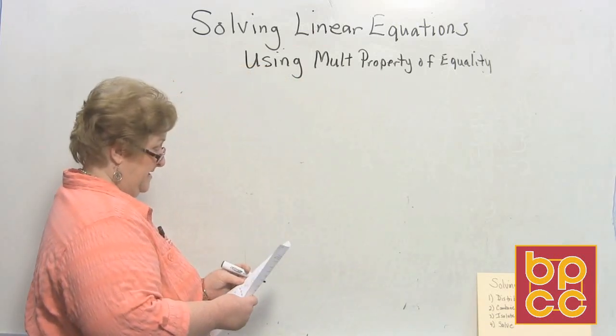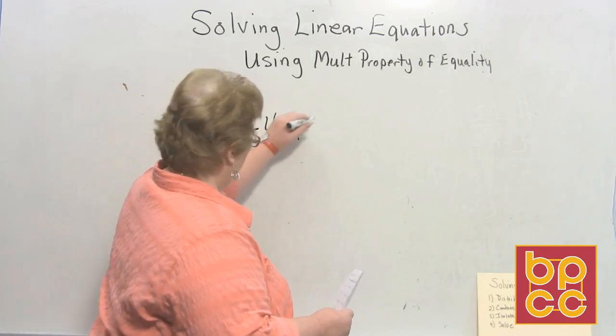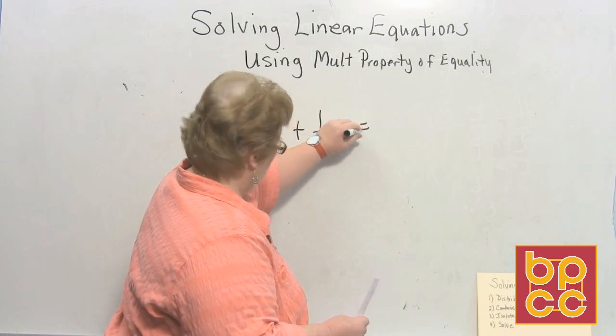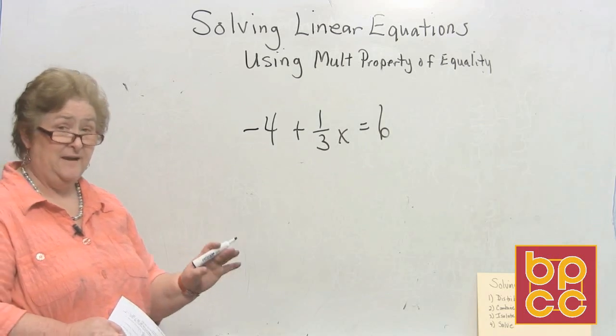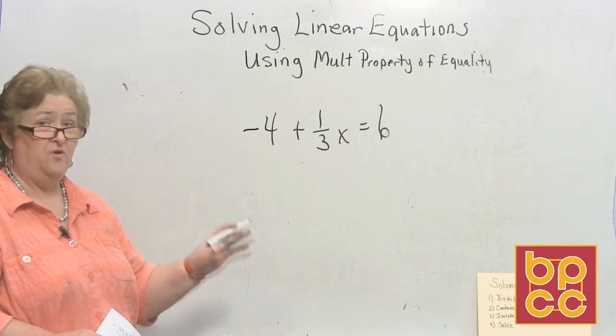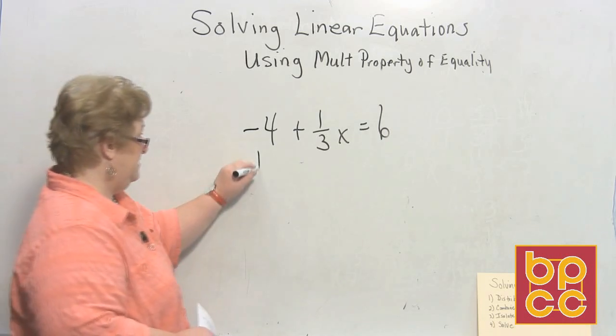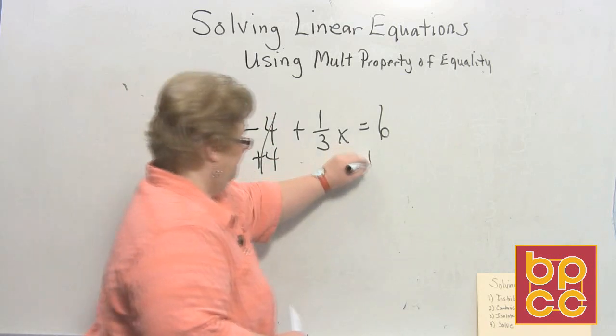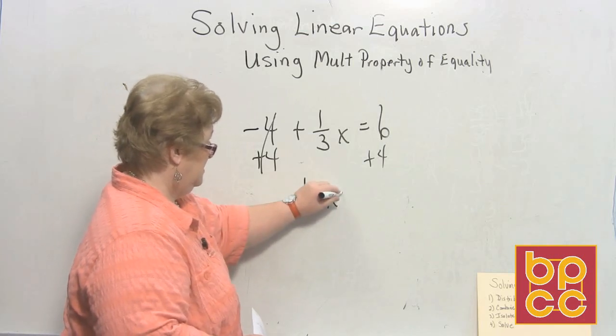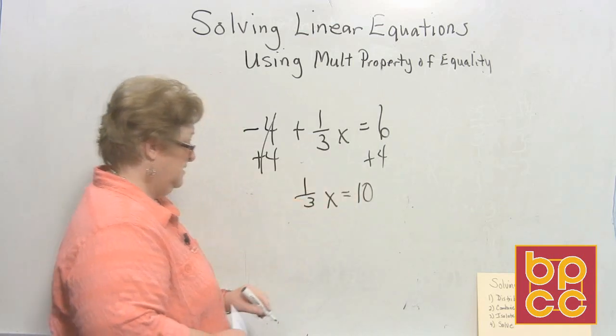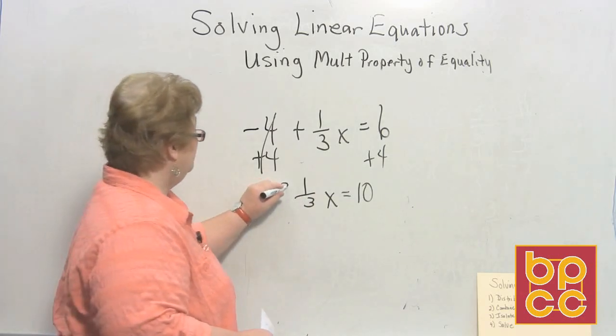Let's say that I have a negative 4 plus 1/3 x equal 6. Now you clearly see that we have a fractional x and I am going to play reciprocal, but not till the negative 4 moves to the other side. And how does he move? By adding the opposite. So I'm going to do a plus 4 clear and a plus 4. And we now have 1/3 x equal 10.